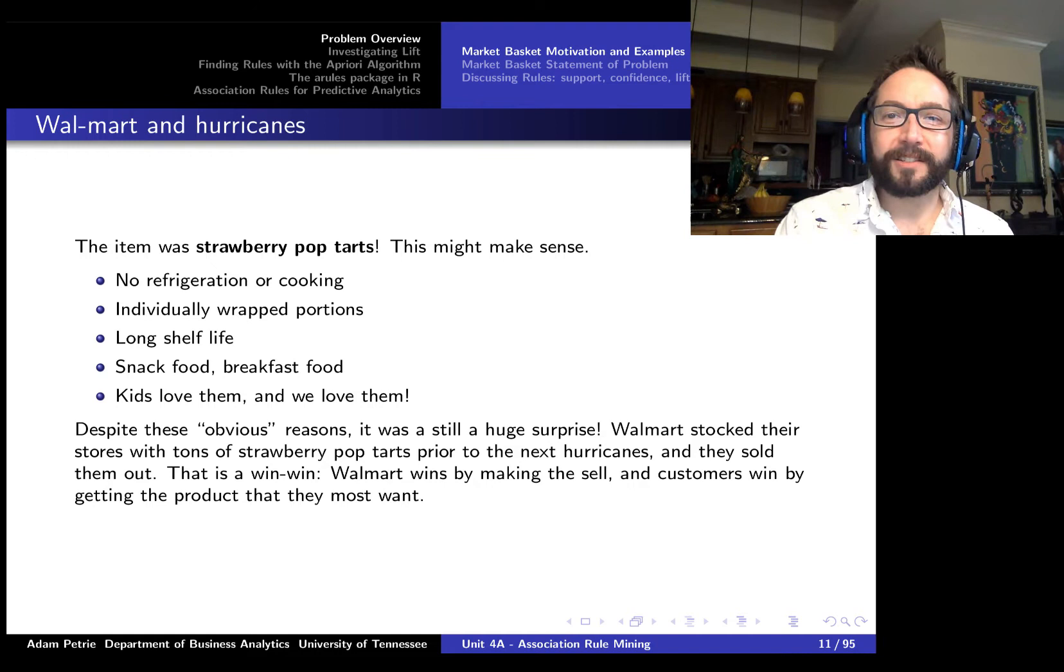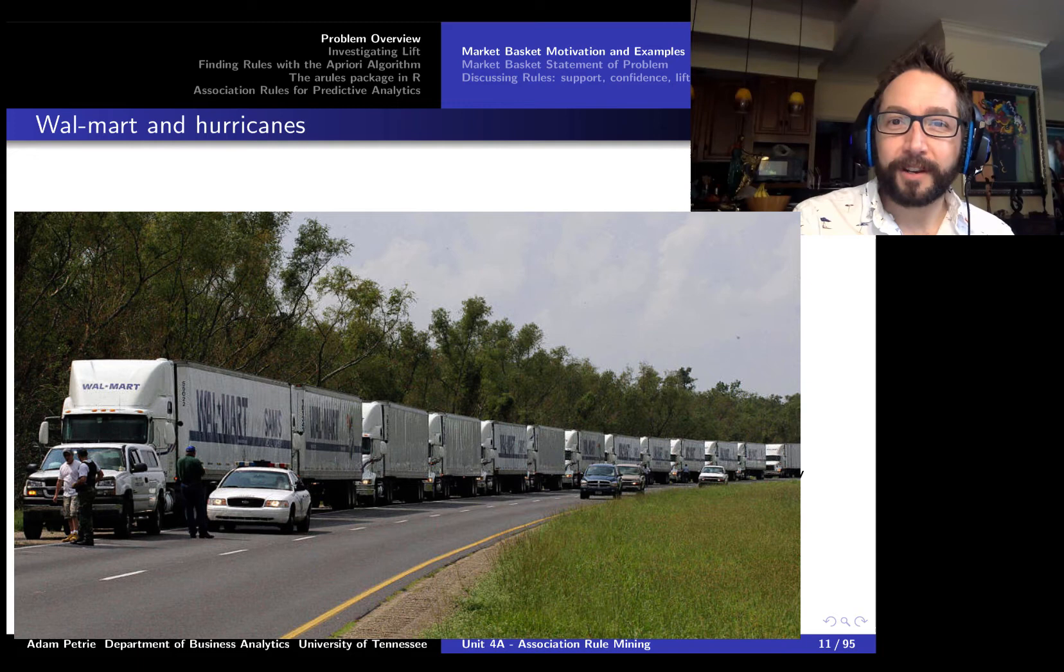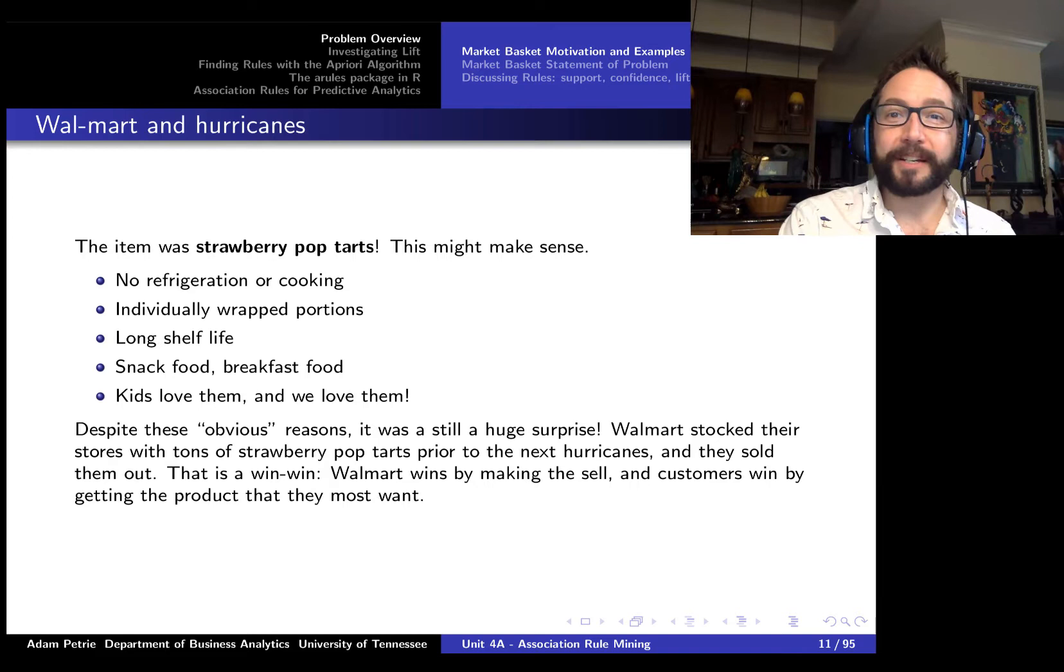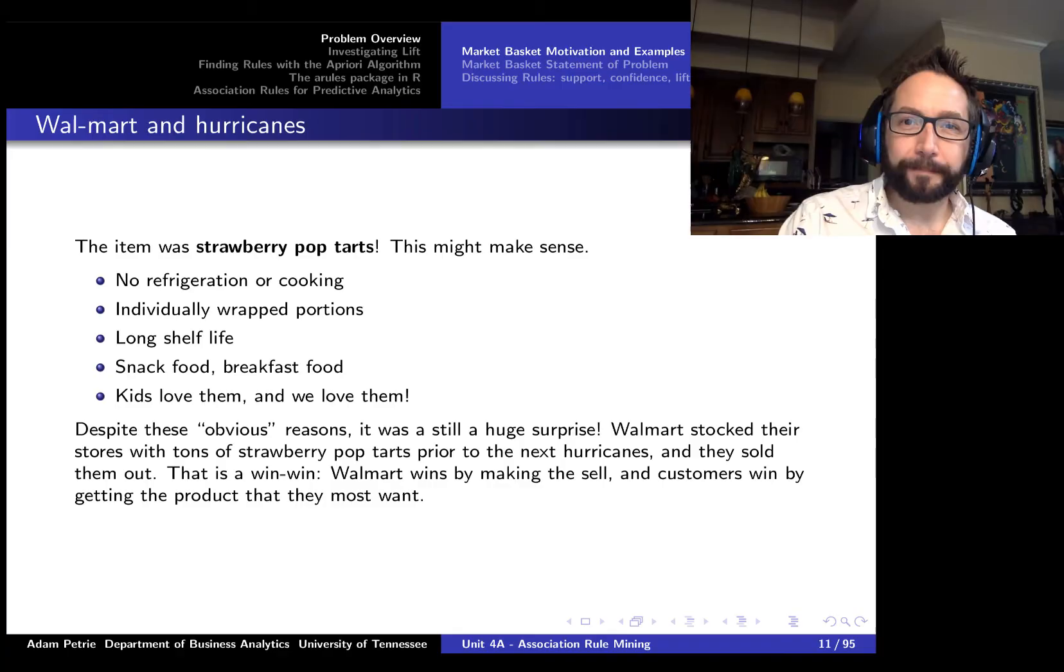But this wasn't known ahead of time until they did this sort of market basket analysis and looked to see, well, what other items are being purchased together with these commonly known staples, like water, like beer, like batteries. And so what did Walmart do with this information? Well, the next time that a series of hurricanes were forecast to crash into Florida, they made sure that all of the Walmarts down there were well-stocked with strawberry pop tarts. And sure enough, they ended up selling out of every single one of them. So it's a win-win for everybody involved. It's a win for the customers because they're getting the items that they would like. It's a win for Walmart because they're able to increase sales. And goodwill is kind of increased overall.